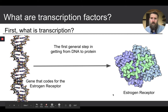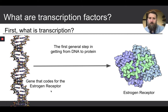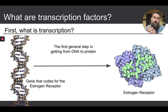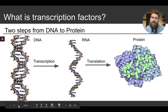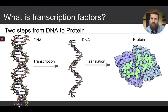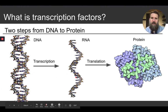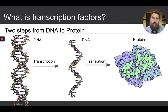What is transcription? It's that first step from DNA to a protein. To illustrate, consider the gene that codes for an estrogen receptor — it gets transcribed, then translated into an estrogen receptor that goes to some target tissue. It sits on the surface of a cell and binds an estrogen hormone. Transcription is easy to remember as the first of two general processes getting from DNA to protein.